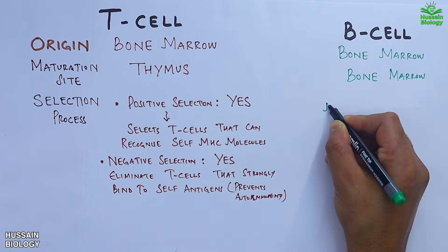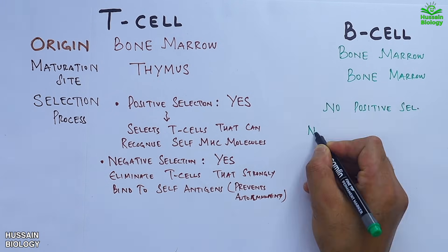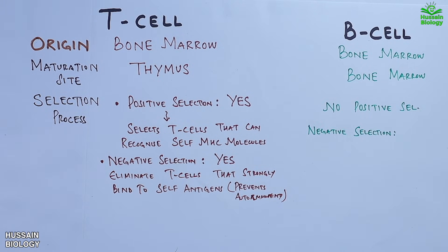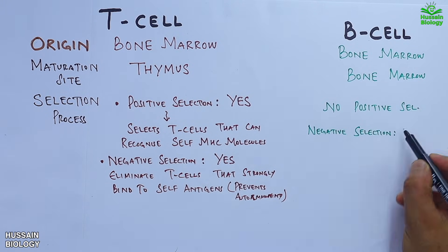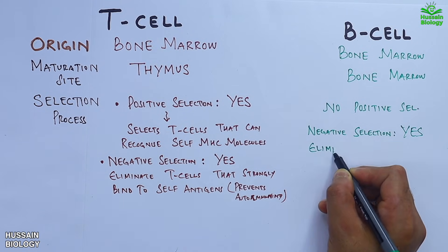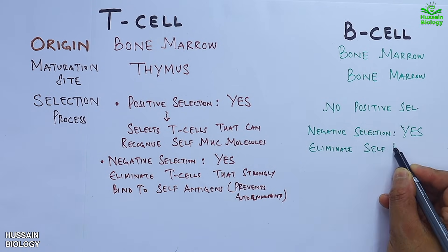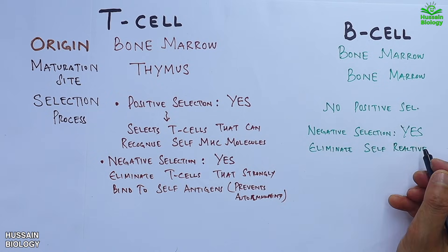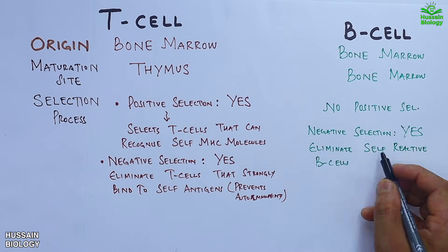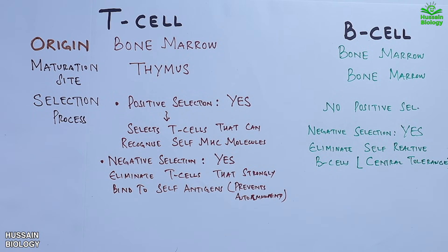In the case of B-cells, there is no positive selection; however, negative selection does take place. During this process, self-reactive B-cells are eliminated in the bone marrow. This step is essential for establishing central tolerance and avoiding autoimmune responses.